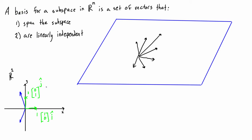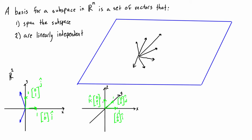Any other two linearly independent vectors in R2 just form a basis, not the standard basis. The same thing applies to R3, where if we have three linearly independent unit vectors oriented along the axes, we call those i, j, and k — conveniently named for 1,0,0 and 0,1,0 and 0,0,1 — and those form the standard basis of R3. But there are still an infinite number of linearly independent sets of three vectors that span all of R3, which would just be considered a basis, not the standard basis.